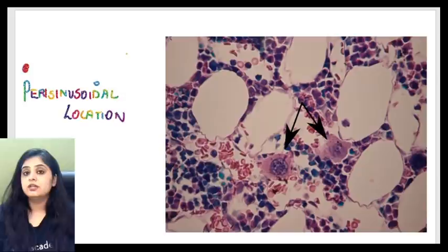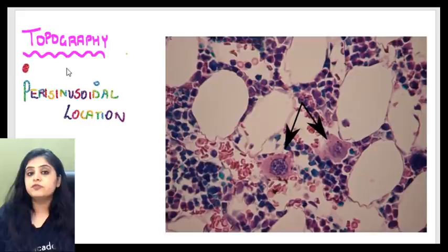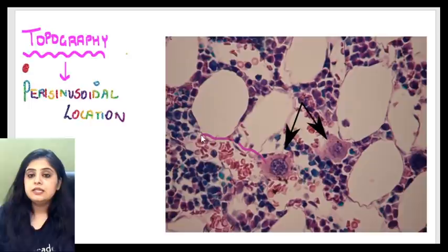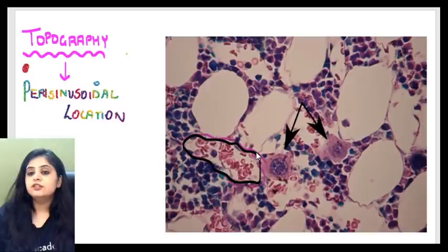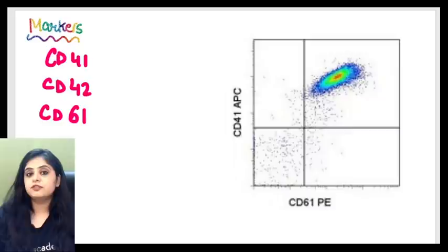Point number two: where is the megakaryocyte located in the bone marrow? The location is referred to as the topography. The topography of a megakaryocyte is perisinusoidal. In the bone marrow image you can see lots of red blood cells, indicating a sinusoid. The megakaryocytes are located just around the sinusoid — perisinusoidal in location.